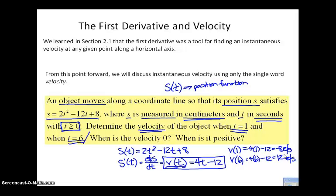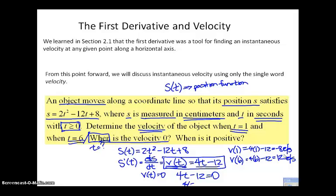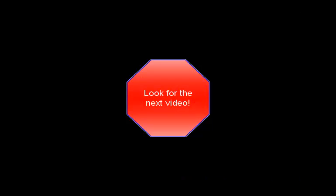When is the velocity zero? When you read the word 'when,' it's asking for what time value — we need a time value specifically when velocity equals zero. Here's the velocity function, so I'm going to find that time value by setting the velocity function equal to zero. Four T equals 12, so T equals 3. The units are seconds, so the velocity is zero at three seconds.